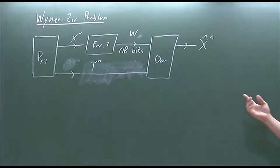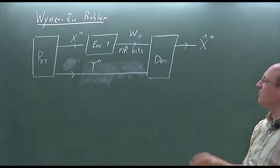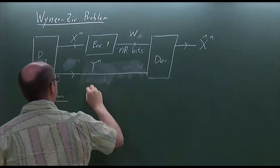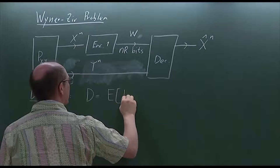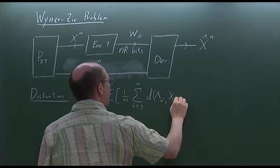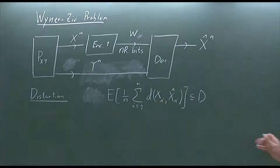What we're going to add new is a distortion constraint. I mentioned that if you're trying to recover both — the general problem with both distortions is unsolved. So suppose we look at this, but now here we have a distortion requirement, namely that d equals the expected value of 1/n times the summation from i=1 to n of some distortion function of x_i and x_i-hat, and this has to be less than or equal to d.